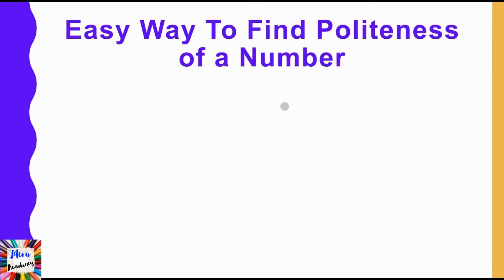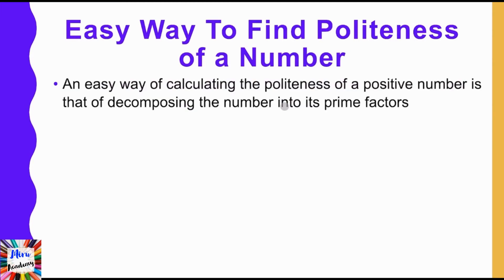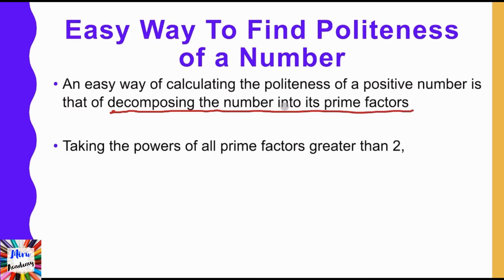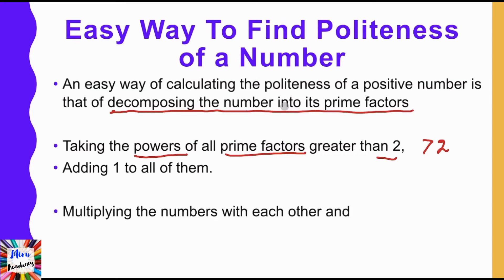In order to find the politeness of a number, we have to decompose the number into its prime factors first. Next, you have to take the powers of all the prime factors which is greater than 2. Then you have to add 1 to all of them. After that, you have to multiply them with each other, then subtract 1.